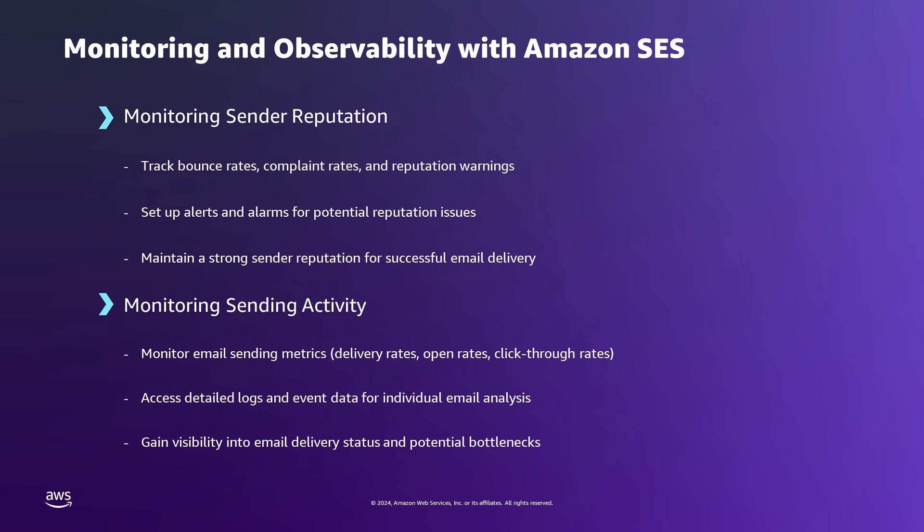Monitoring and observability are crucial aspects of email delivery with SES, as they provide valuable insights into our sender reputation, sending activity, and potential deliverability issues. Monitoring email sending with Amazon SES can be broadly categorized into two main aspects: monitoring sender reputation and monitoring sending activity.